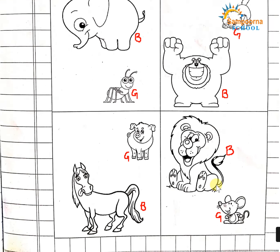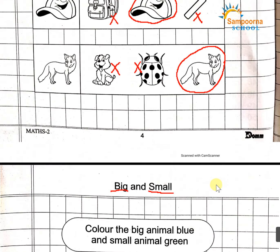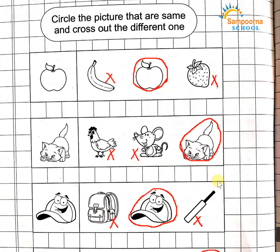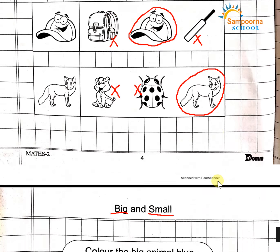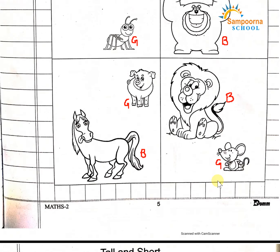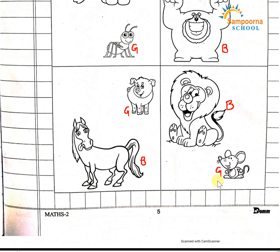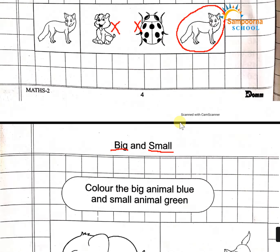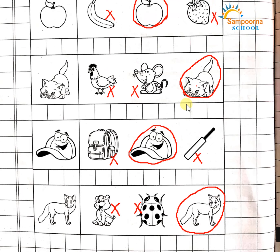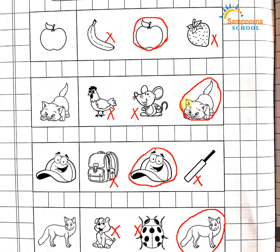Students, this is two pages — page number four and page number five of skill book two. You have to do this in your copy and complete it. Circle the same pictures and cross out the different ones. That's all for today. Thank you.